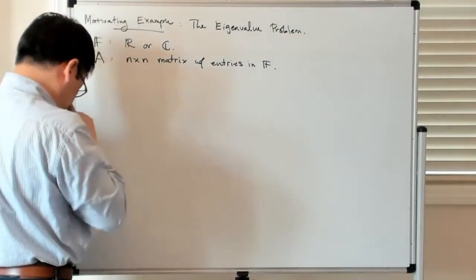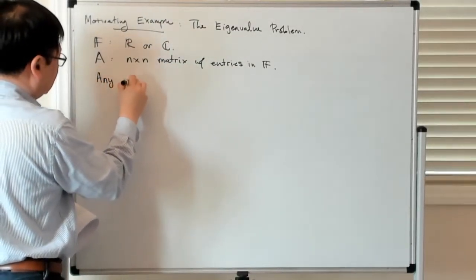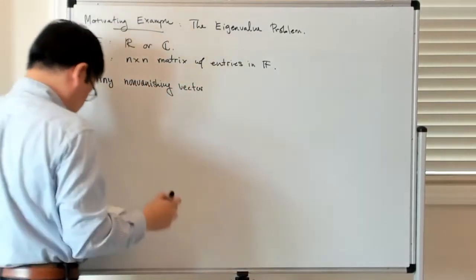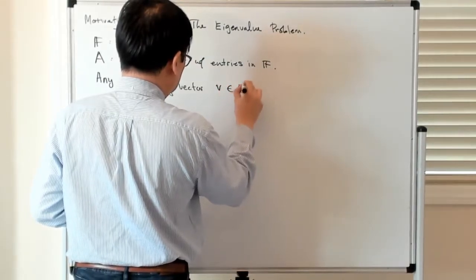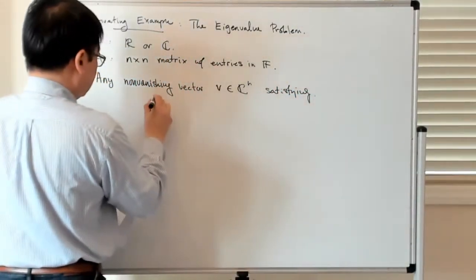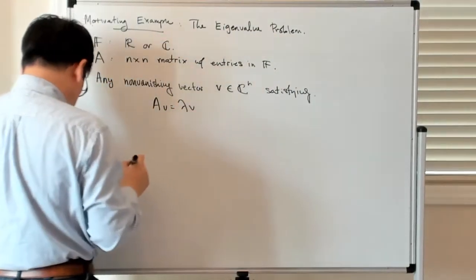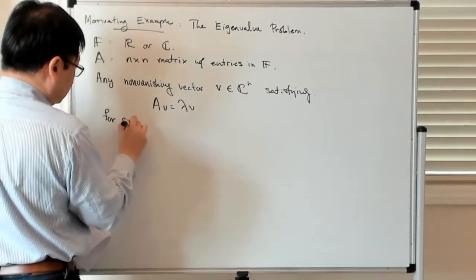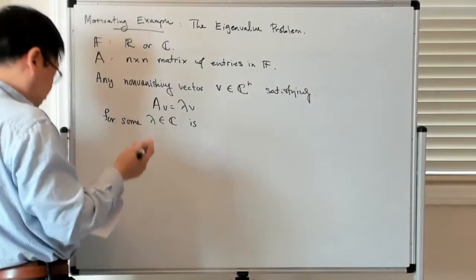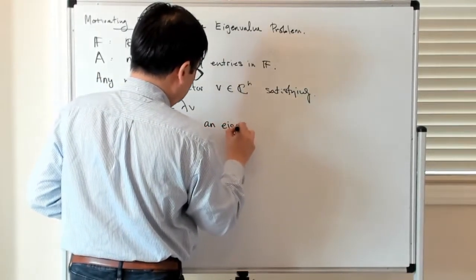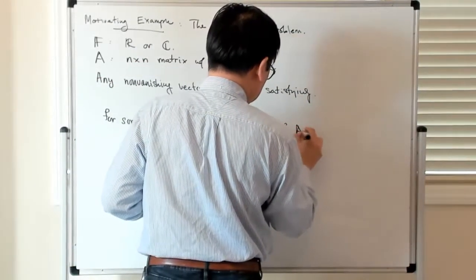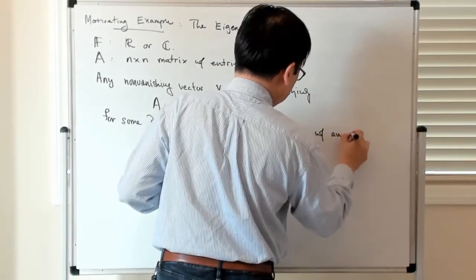So any non-vanishing vector V in C^n satisfying A times V equals lambda times V, for some lambda in the complexes, is called an eigenvector of A with an associated eigenvalue.